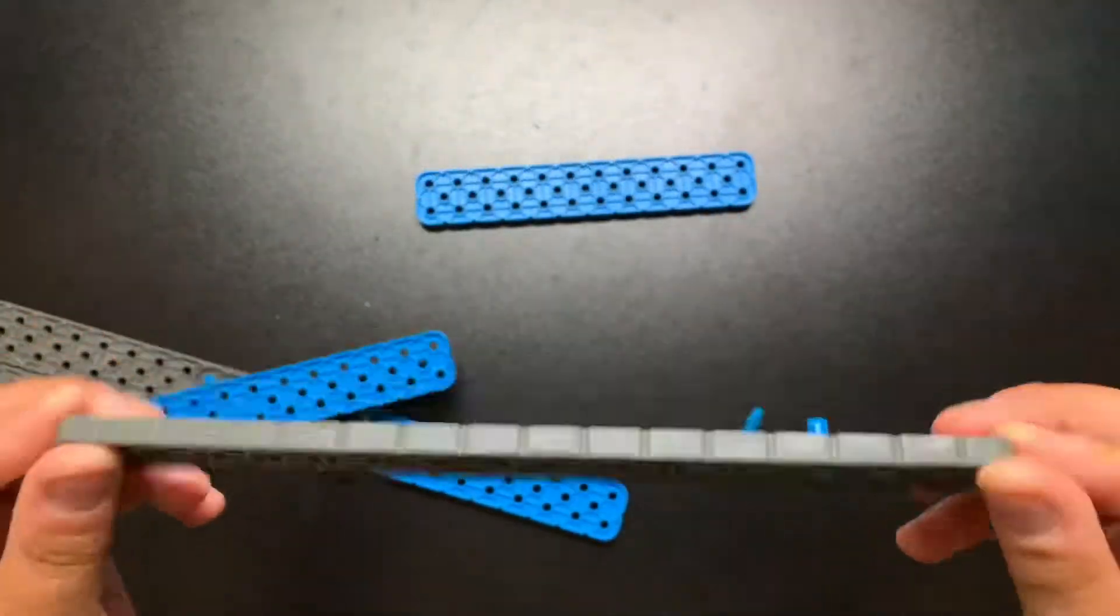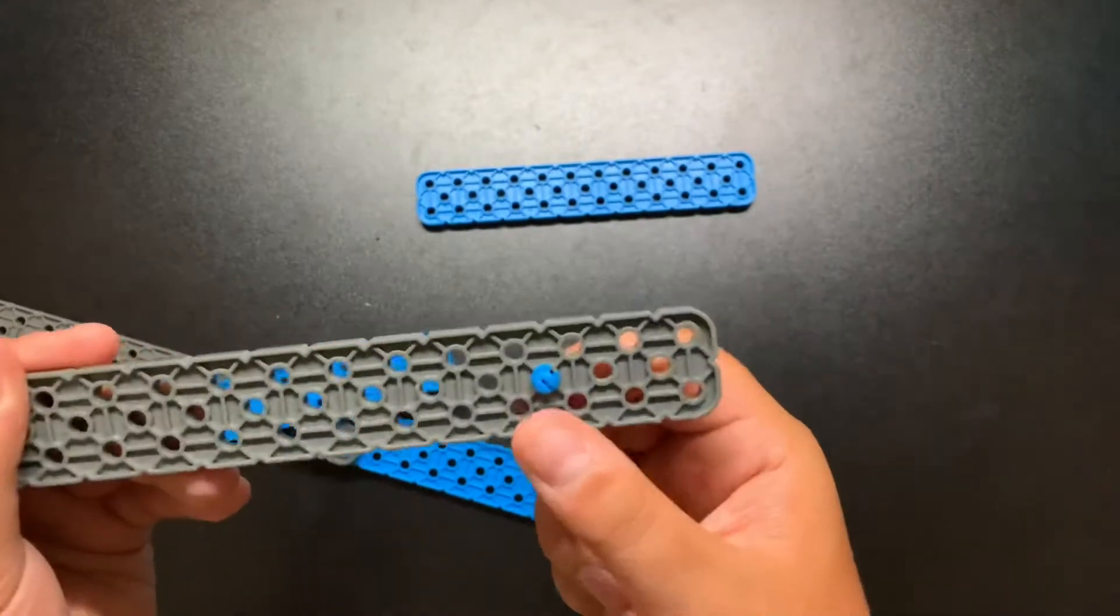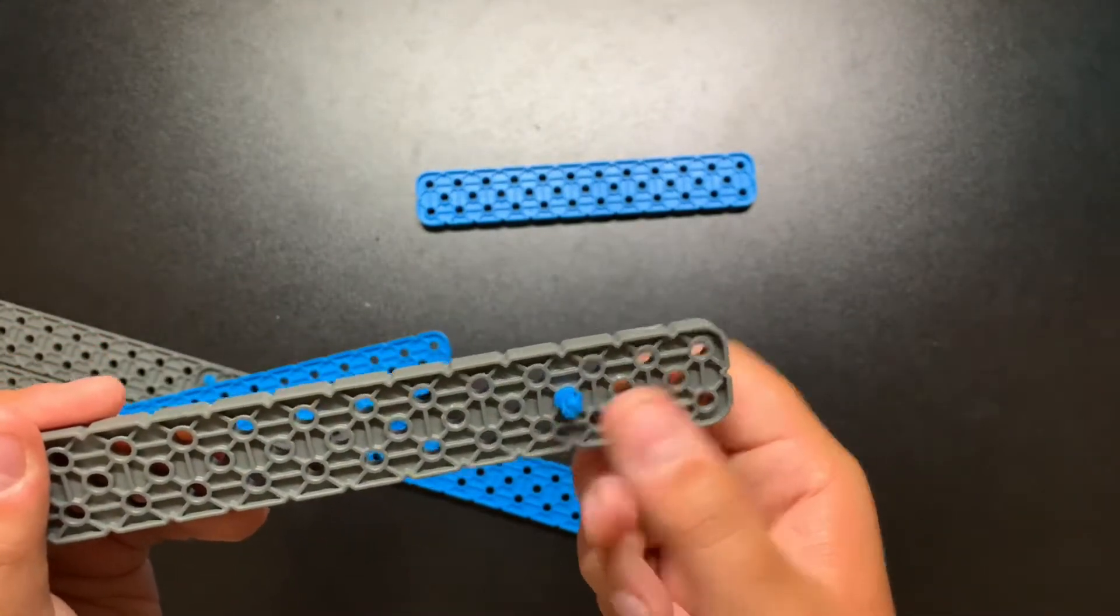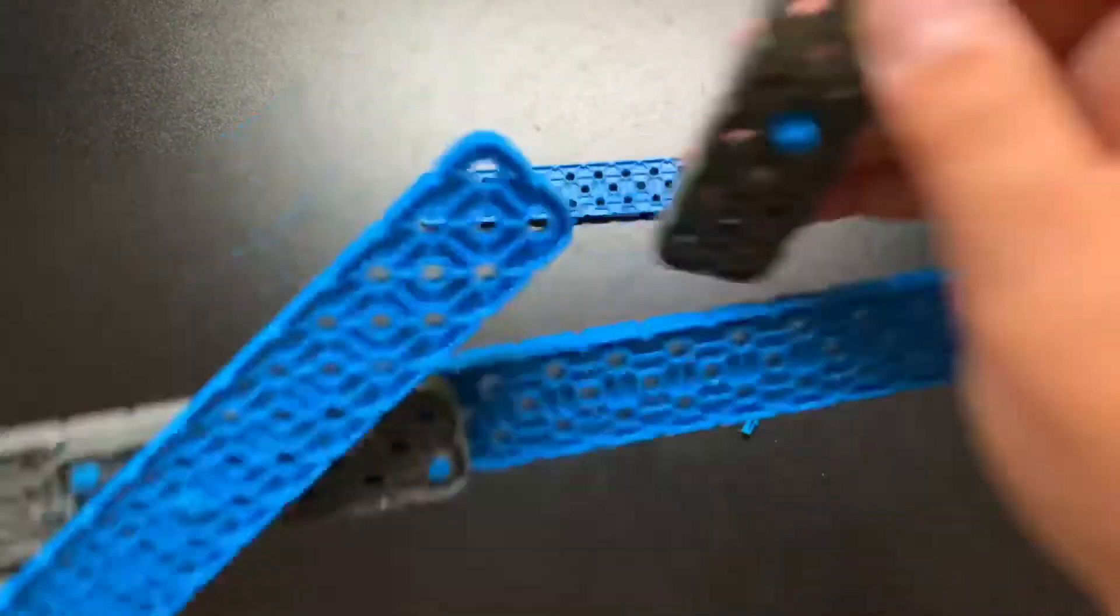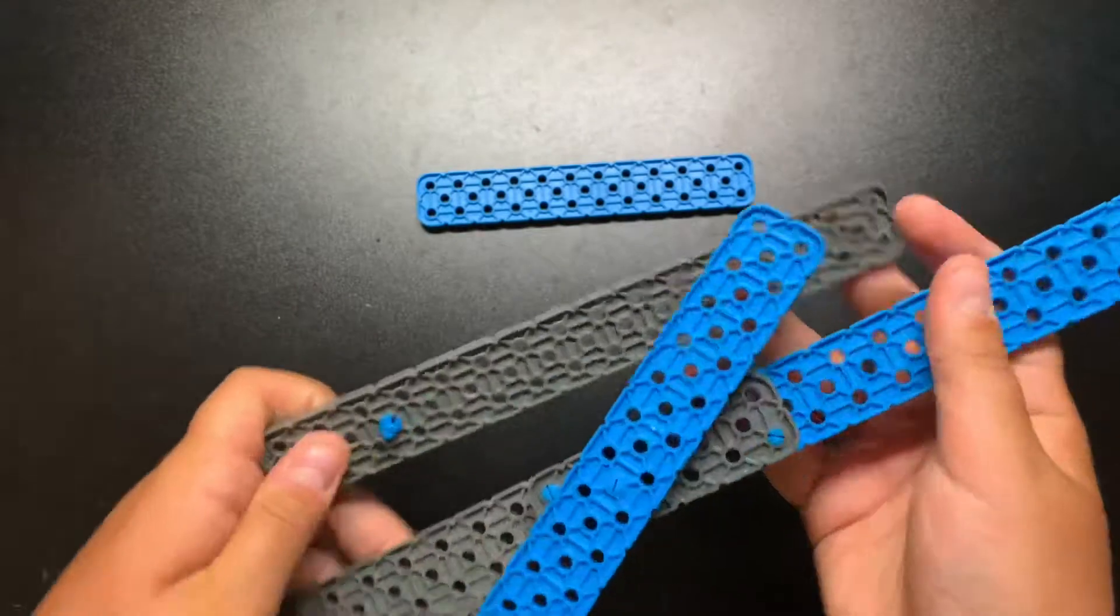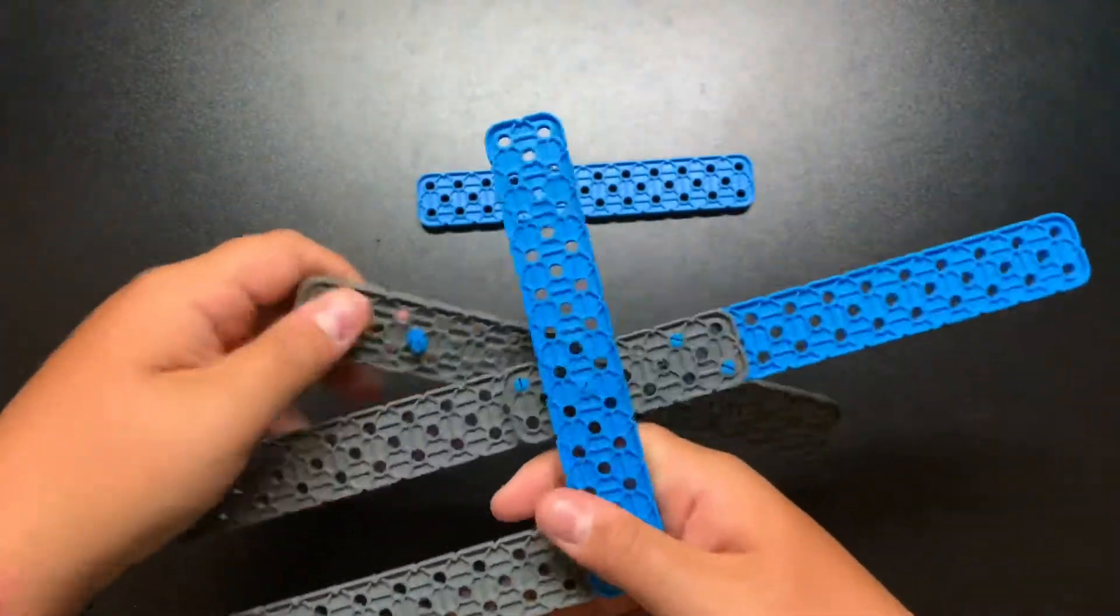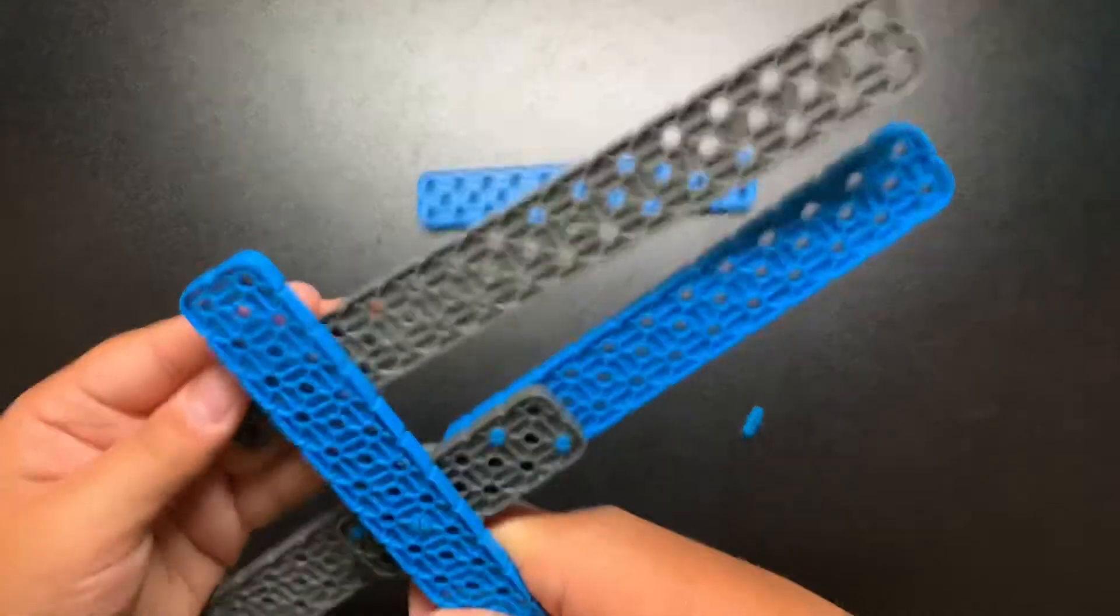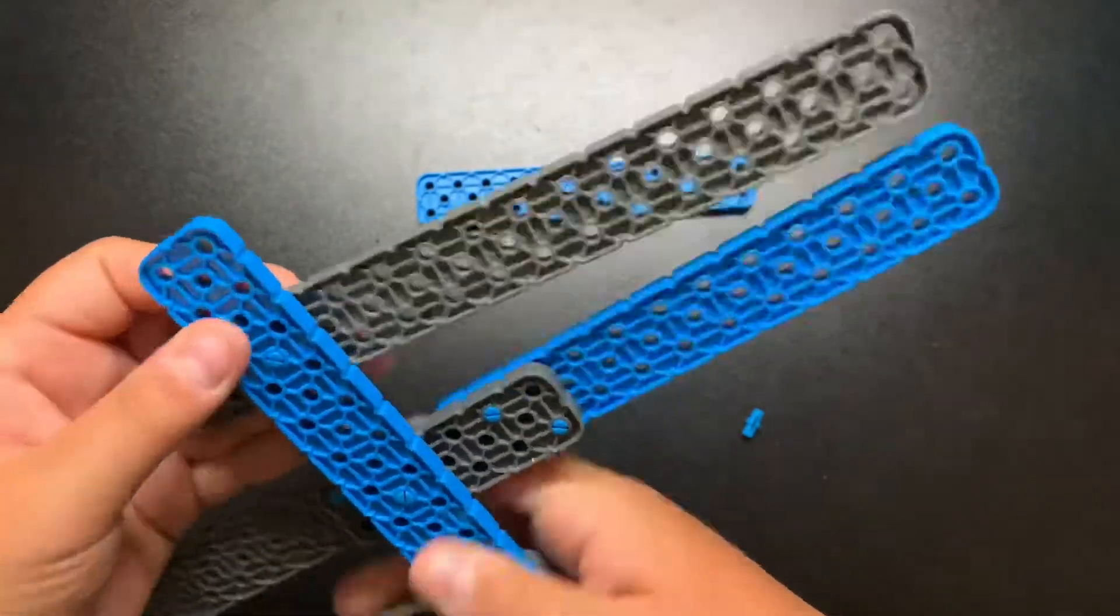Now get one of your 2 by 18 beams and put a connector pin. Skip two holes in the middle and put it right there. And then right here on this beam for the four bar lift that we have so far, count three holes from this beam.